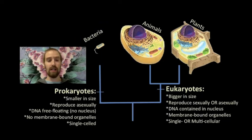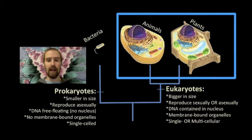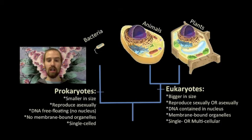Eukaryotic cells, like our plants, animals, and fungi, are typically bigger, they contain a variety of membrane-bound organelles including a nucleus, and they can be multicellular. Today's story takes place a long time ago and involves a peculiar relationship between early versions of both of these basic cell types.